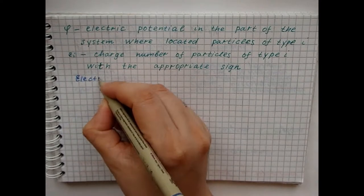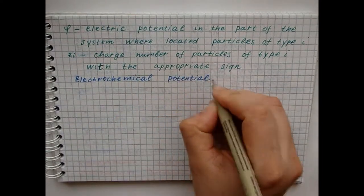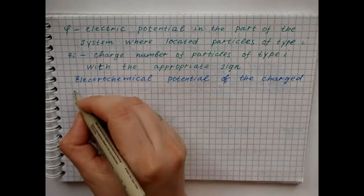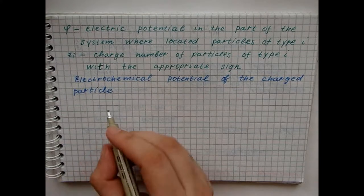By analogy with the chemical potential, the electrochemical potential of charged particles is determined by the derivative of the electrochemical Gibbs free energy with respect to the number of moles of a given component.